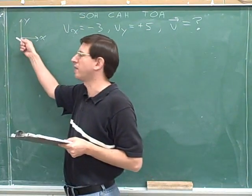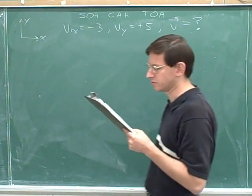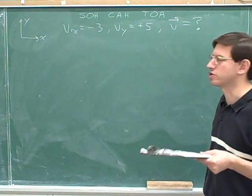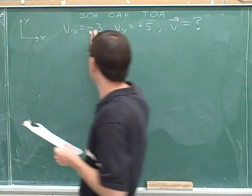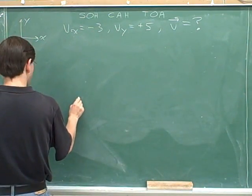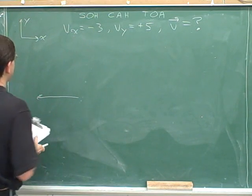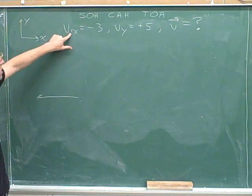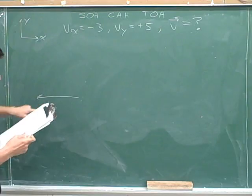We can start by writing down the positive axes, as we always do. Now we're going to have to try to draw a picture. We can start by drawing our x component. The positive x direction is right, and the x component is negative, so it's pointing to the left.